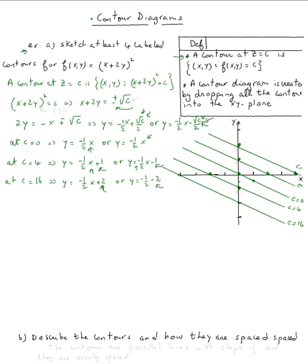By the way, notice that c cannot be negative because it appears inside the radical, so c has to be positive or equal to zero. You can also see this directly: something squared equals c, so c must be non-negative.